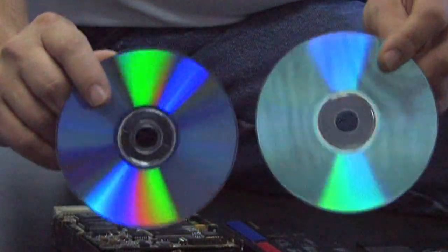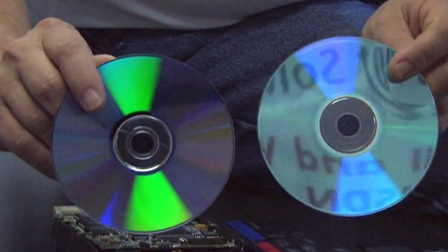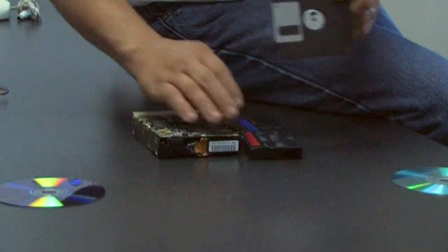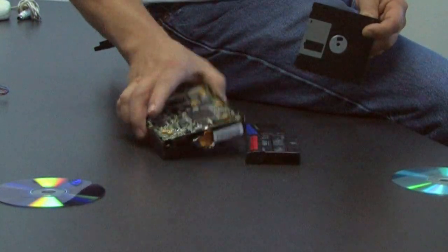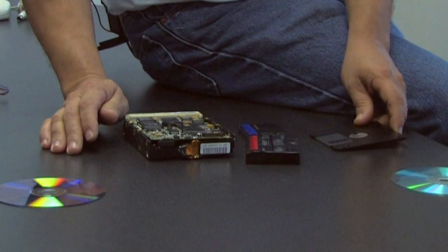CD and DVD drives use lasers to write onto the mirrored surface. Now the thing that the floppy drive and the tapes and the hard drive have in common is that they store information magnetically.